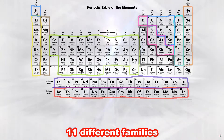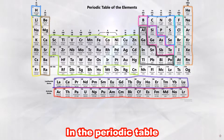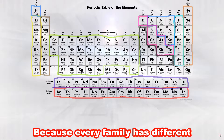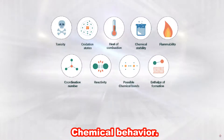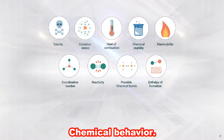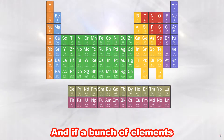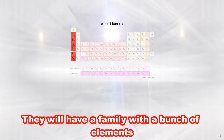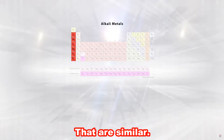There are 11 different families in the periodic table. They are split up into different families because every family has different chemical behavior. And if a bunch of elements have the same properties, they will have a family with a bunch of elements that are similar.